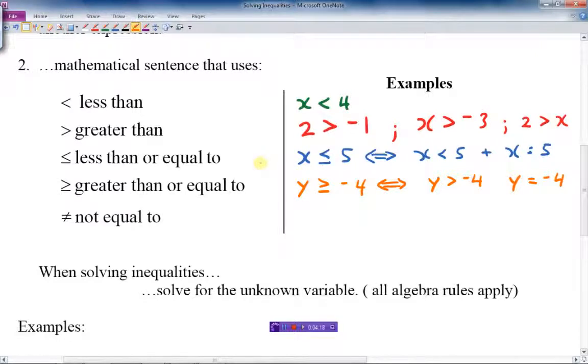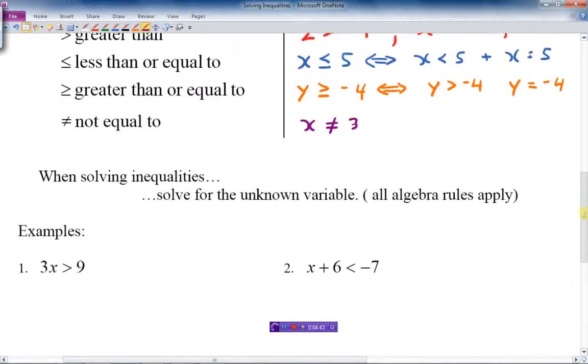The last one here, the not equal to. I could just write down x is not equal to 3. So in this case here, x can be anything except for 3. So it's pretty straightforward. x is not equal to 3, so x can be anything except for 3.